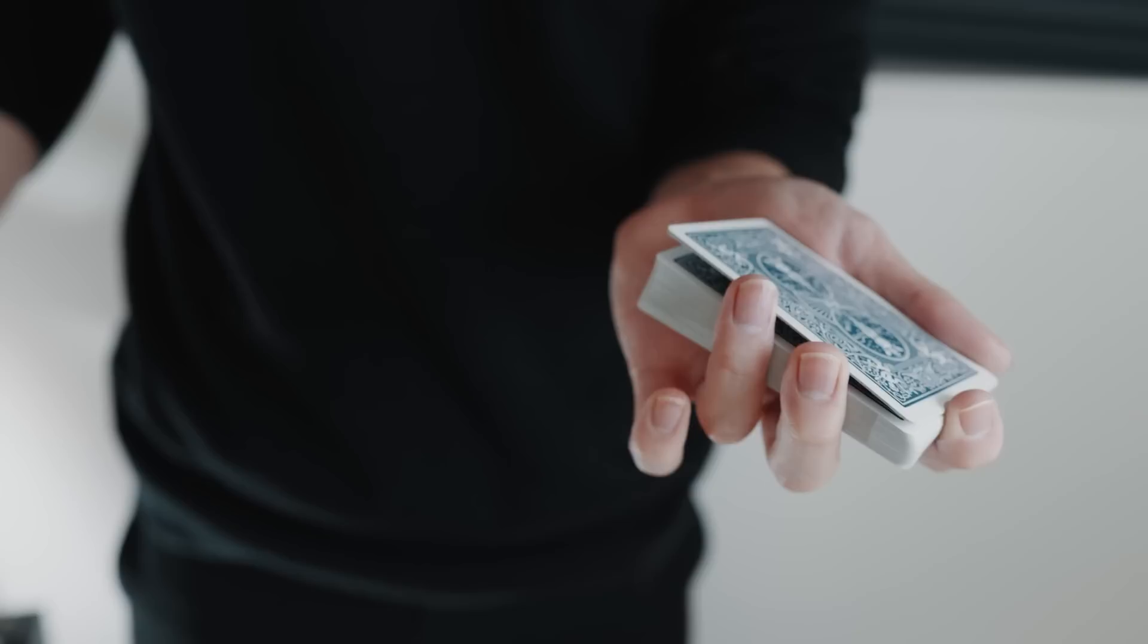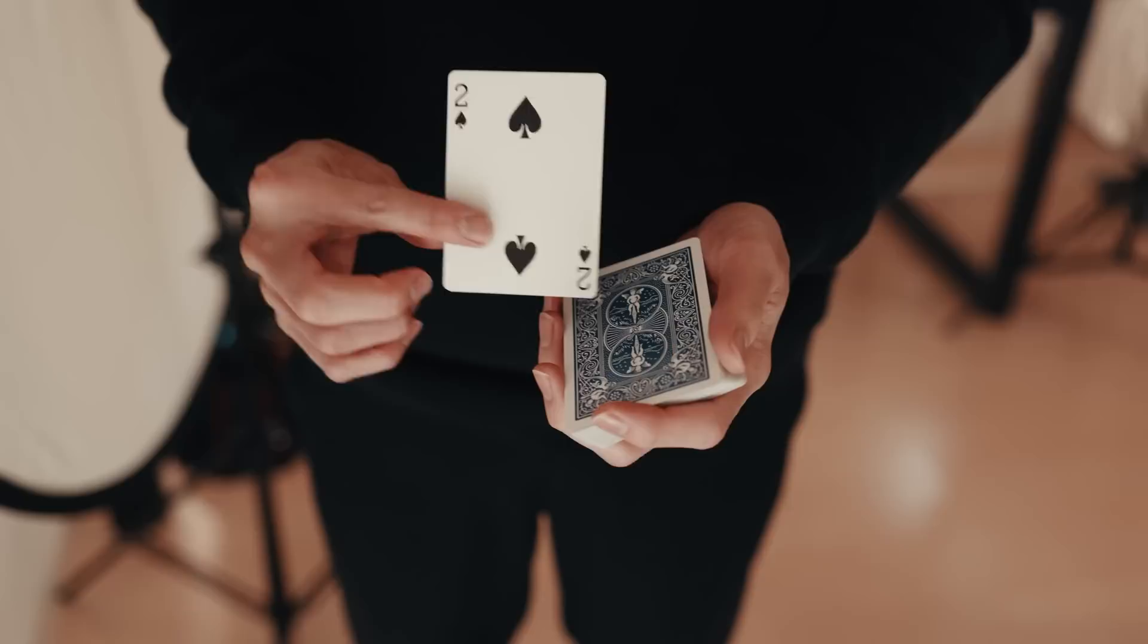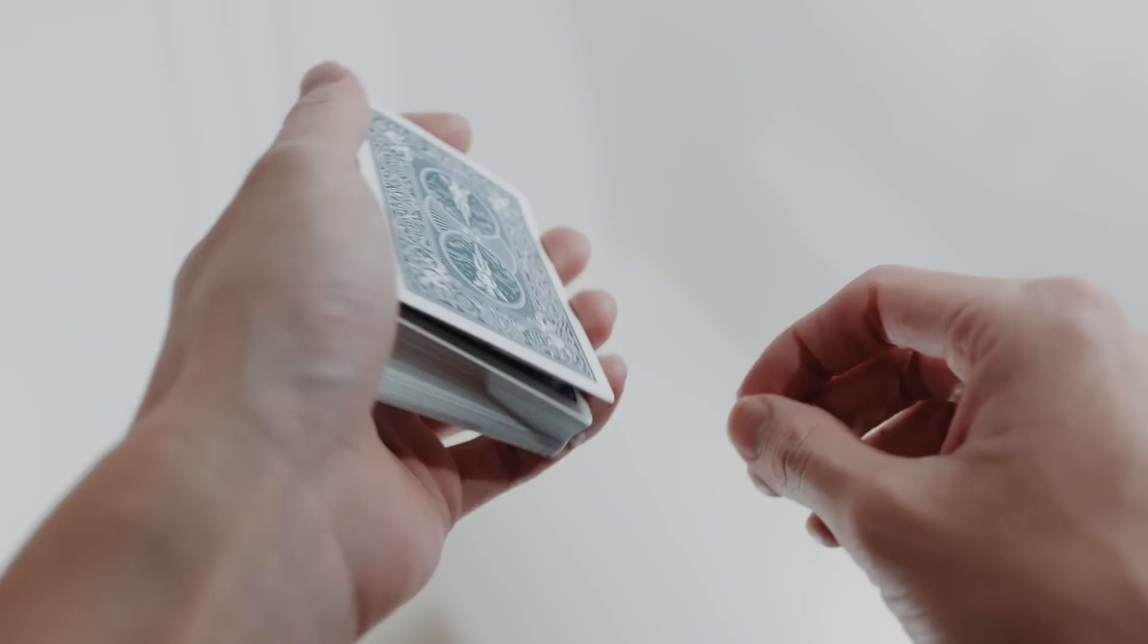So this is where you're going to reinsert the card you've shown to the spectator. However, we need to make one more break in the deck. So using the pad of your thumb, split the deck around halfway and then tilt the deck to the right. From the front, it looks as if you're just placing the card into a big break in the middle of the deck. When in reality, because of that tilting illusion, you can place it third from the top.